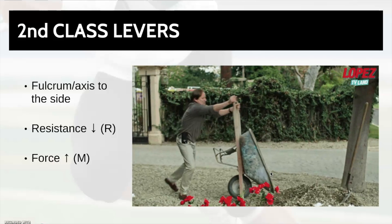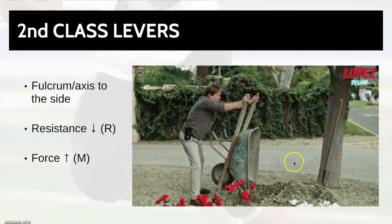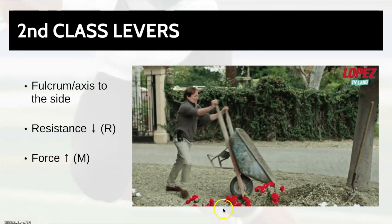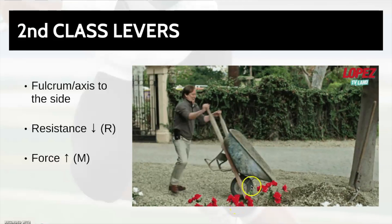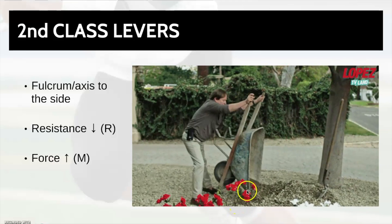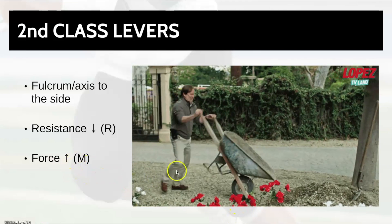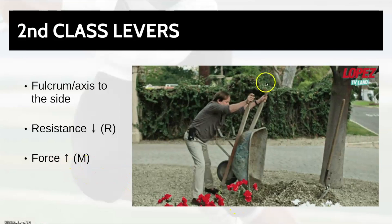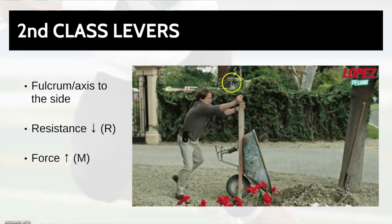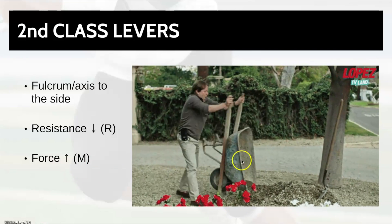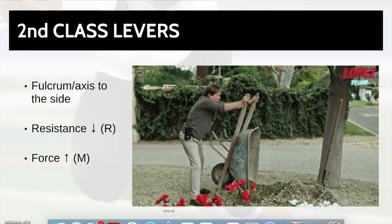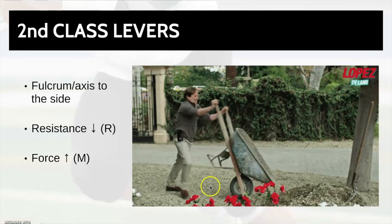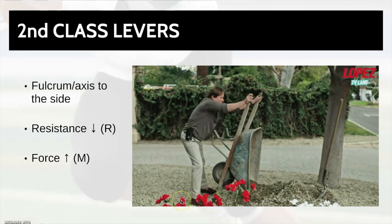In real life, an example of this is the wheelbarrow. The pivot point is the wheel. The force is the person pushing it up, and the resistance is the weight of whatever's in the wheelbarrow pushing down.